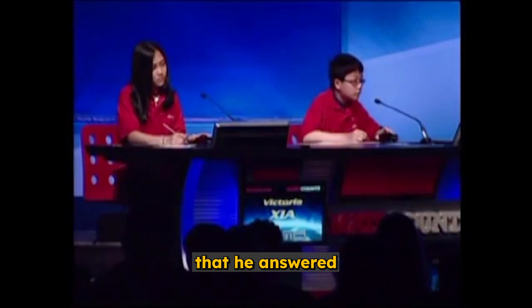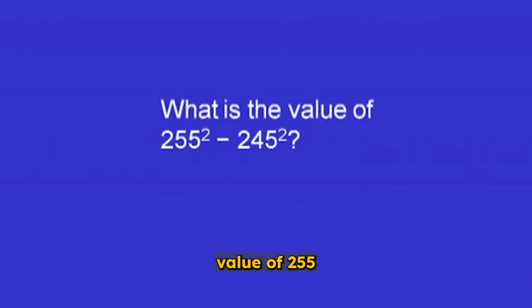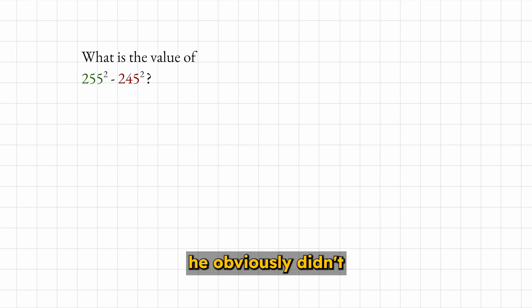Here's the second problem that he answered even faster than the first one. The next question is, what is the value of 255² minus 245²? Scott answers 5000. He obviously didn't square each of the numbers to get the answer so quickly.